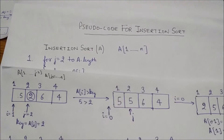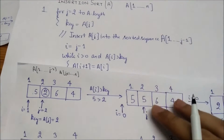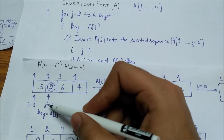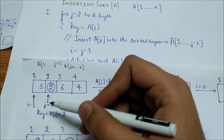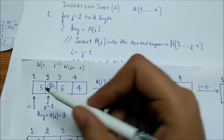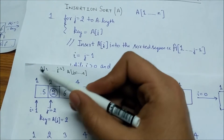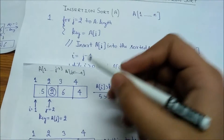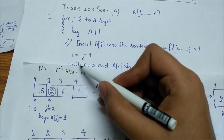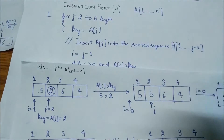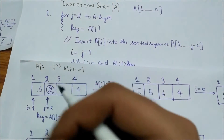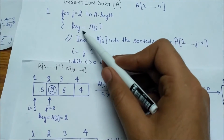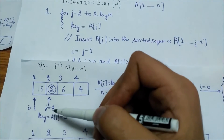Let's apply the pseudocode to an example. Suppose our array contains elements 5, 2, 6, 4. The index j indicates the current card being inserted into the hand. Elements a1 through a(j-1) correspond to the already-sorted elements in the left hand, and elements a(j+1) through n are the remaining cards on the table. We take a variable key and store the j-th element into it.